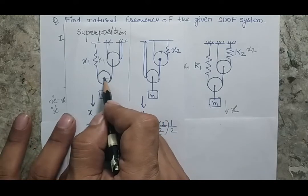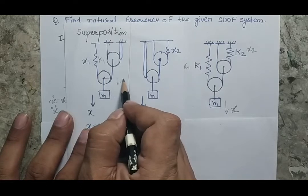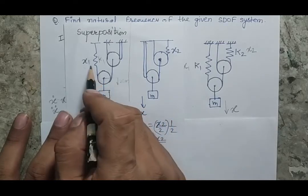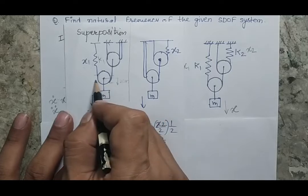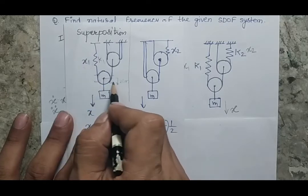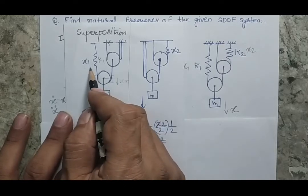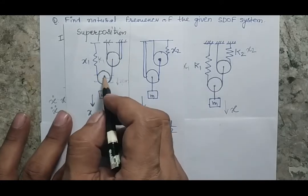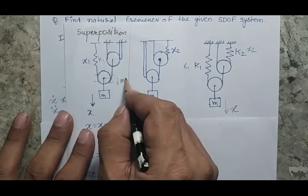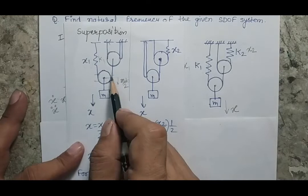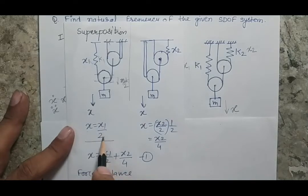If the center is moved by 2 cm, then what is the extension in the string? If it is coming downward by 2 cm, there must be a 2 cm length required at both sides. That means if the center is moving by 2 cm, the extension in the spring should be 4 cm. On the other hand, if the extension in the spring is X1, the motion of the center will be X1/2. So in this case, if the spring is extending by an amount of X1, X is equal to X1/2.